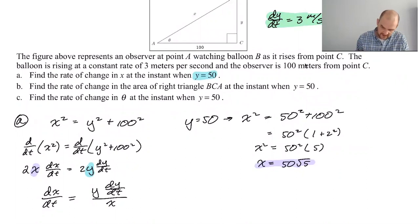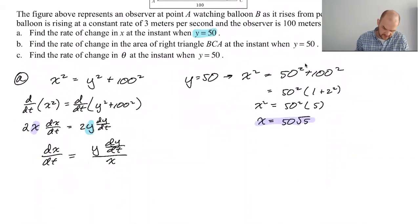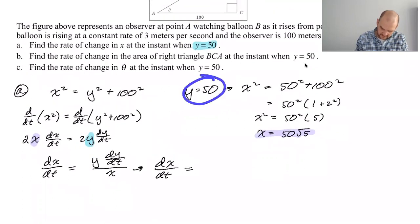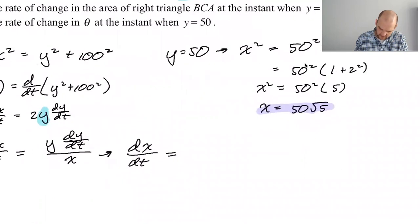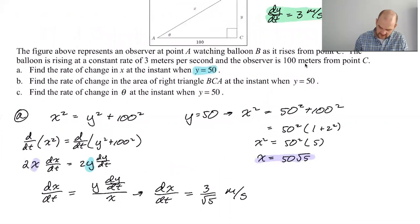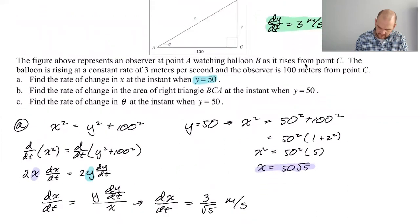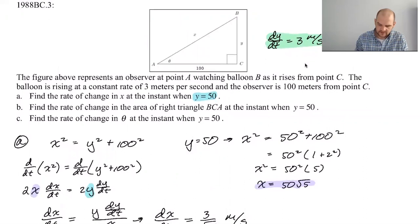dy/dt is three. So I'm just going to plug it in here and say dx/dt is, so we get three times 50 over 50 root five, three over root five. So I'm going to write that as three over root five meters per second. So X is increasing three over root five meters per second. It's increasing more slowly than this, which like that kind of makes sense to me. I don't know, just like thinking about life and how things happen.